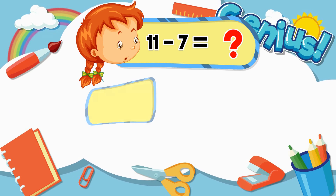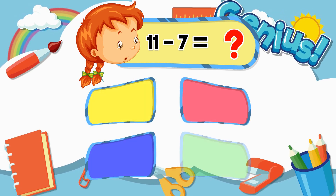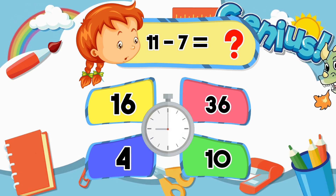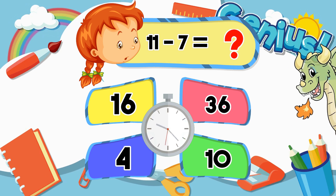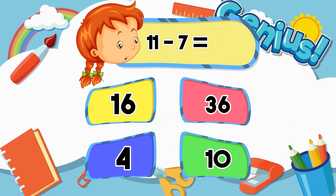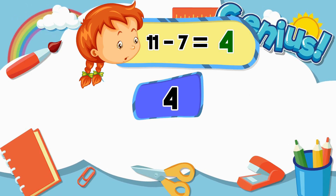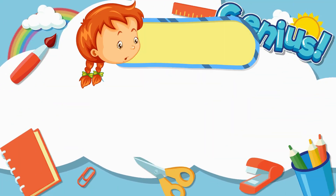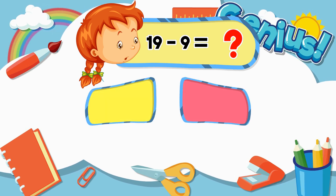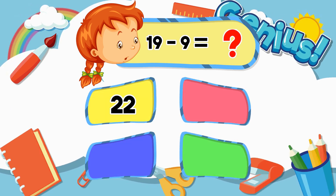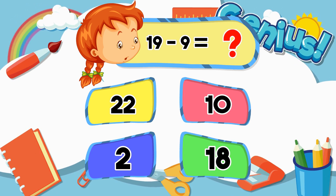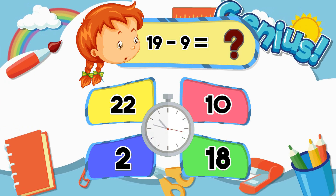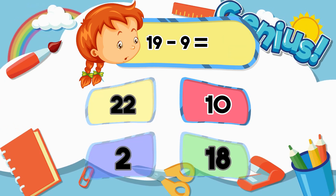What is 11 minus 7? What is 19 minus 9? 22, 10, 2, 18. 10.